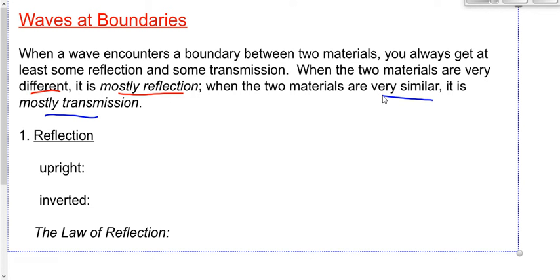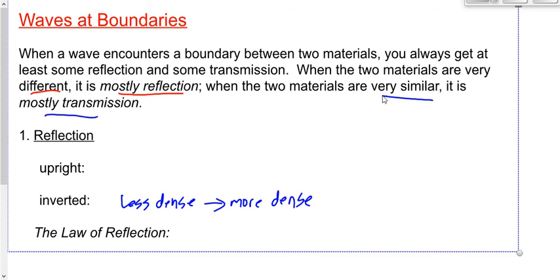Let's look at the reflected wave — the part that bounces back. Sometimes that wave will be reflected right side up. But remember the demonstration we did just before the break? We sent a wave down the slinky and it reflected off the person's hand — it was reflected upside down. When the wave went from less dense to more dense, it was reflected upside down.